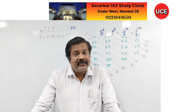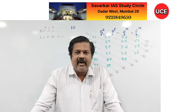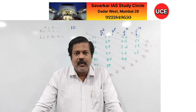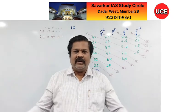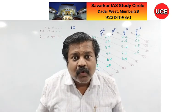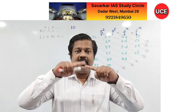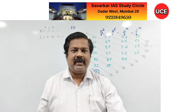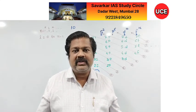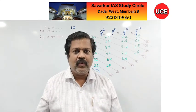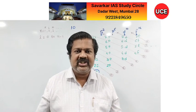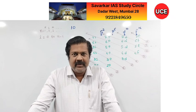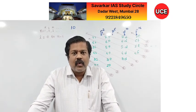Imagine you had a microscope where you could see a single atom like a huge football — even then, you could not locate an electron, because it would travel 2 lakh km (greater than Earth's circumference) in one second. This leads to the principle called Heisenberg's Uncertainty Principle.